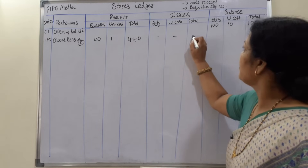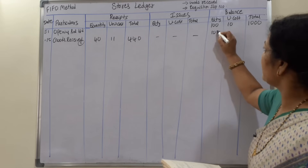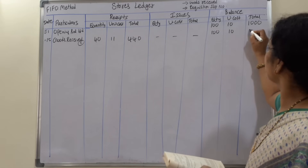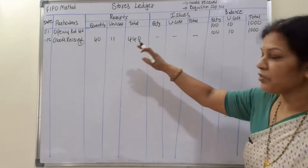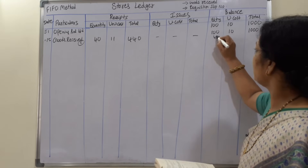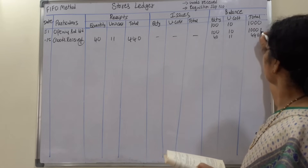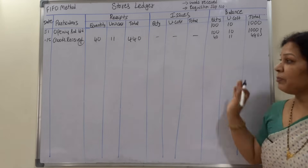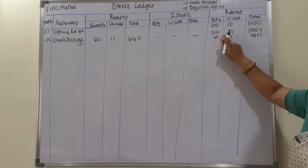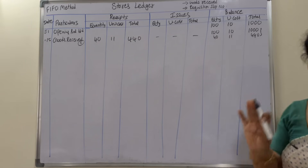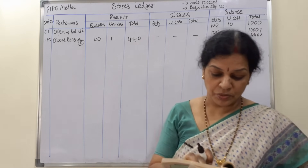After this January 15th purchase, what is the balance? We already had 100 units at 10 rupees (total 1000), and now we purchased 40 more units at 11 rupees (total 440). So the balance shows two lines: 100 units at 10 rupees and 40 units at 11 rupees — a total of 140 units in the store.